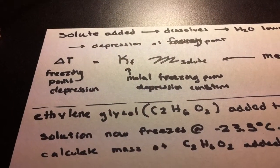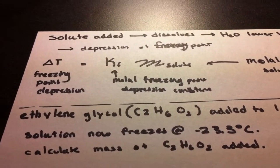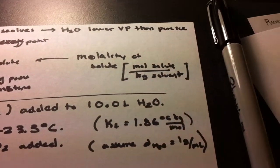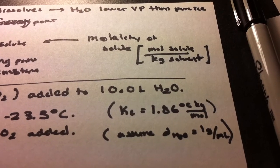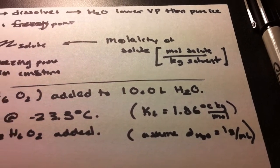Right now we want to find the mass of ethylene glycol added. We're also given the KF. And also we can assume that the density of water is 1 gram per milliliter.